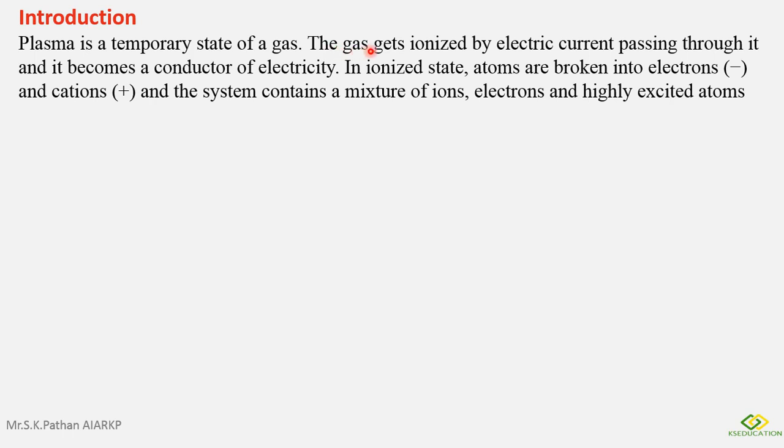Let's see how. The gas gets ionized by electric current passing through it and it becomes a conductor of electricity. In ionized state, atoms are broken into electrons and cations, that is positive and negative. And the system contains a mixture of ions, electrons, and highly excited atoms.